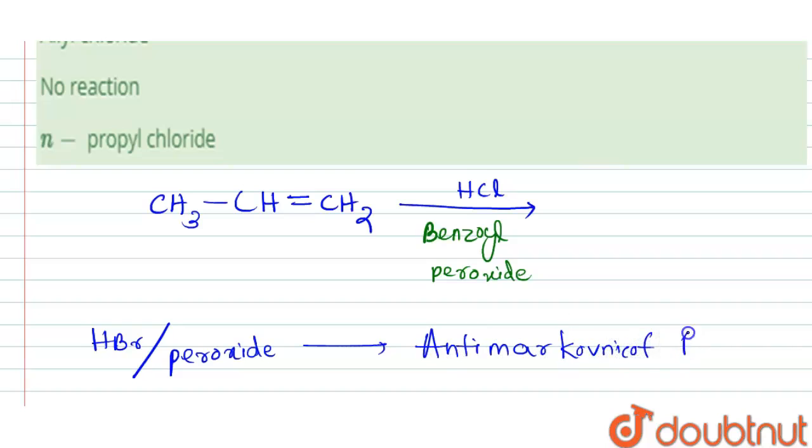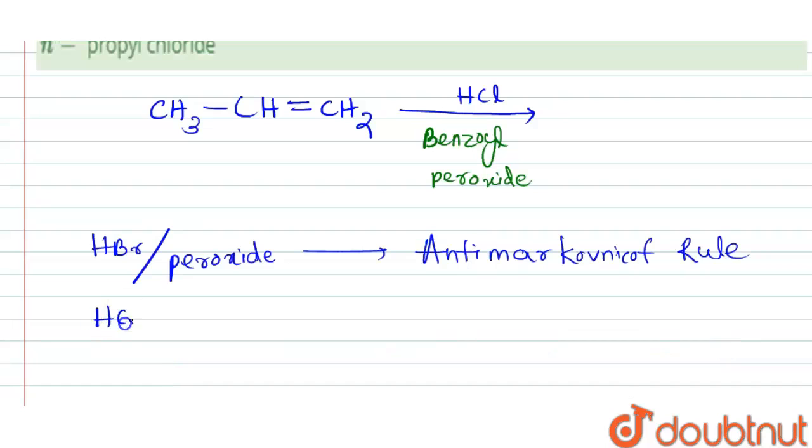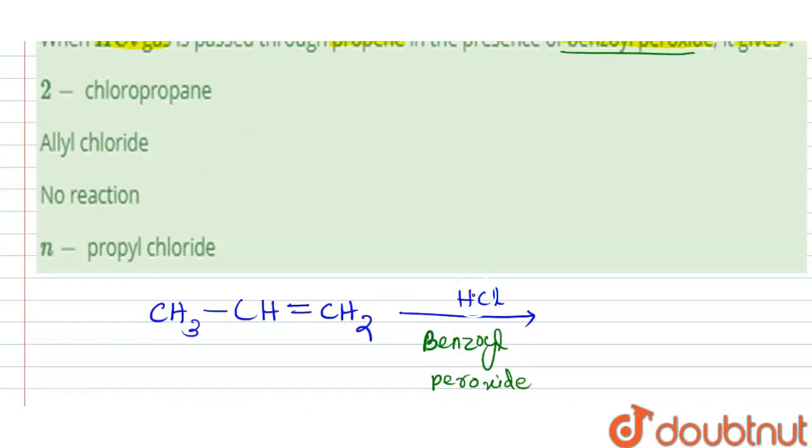But when hydrogen chloride reacts with alkene in the presence of peroxide, it will follow normal Markovnikov rule. So here it is HCl in the presence of peroxide, so it will follow Markovnikov's rule.